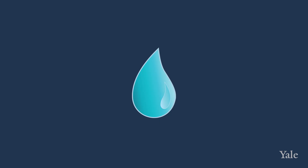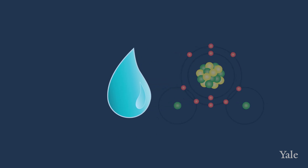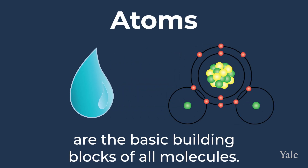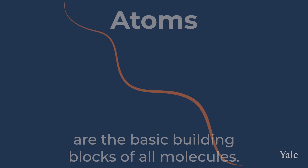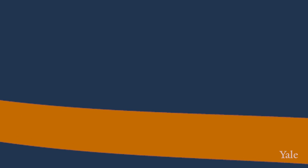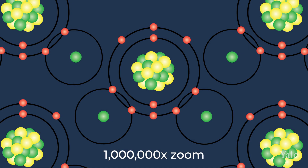Matter, anything that occupies space and has mass, is everywhere. Water, sushi and your smartphone are all made of matter. All matter is made up of tiny particles called atoms, which are the basic building blocks of all molecules. They are so tiny that even the thinnest strand of human hair is a million times larger.